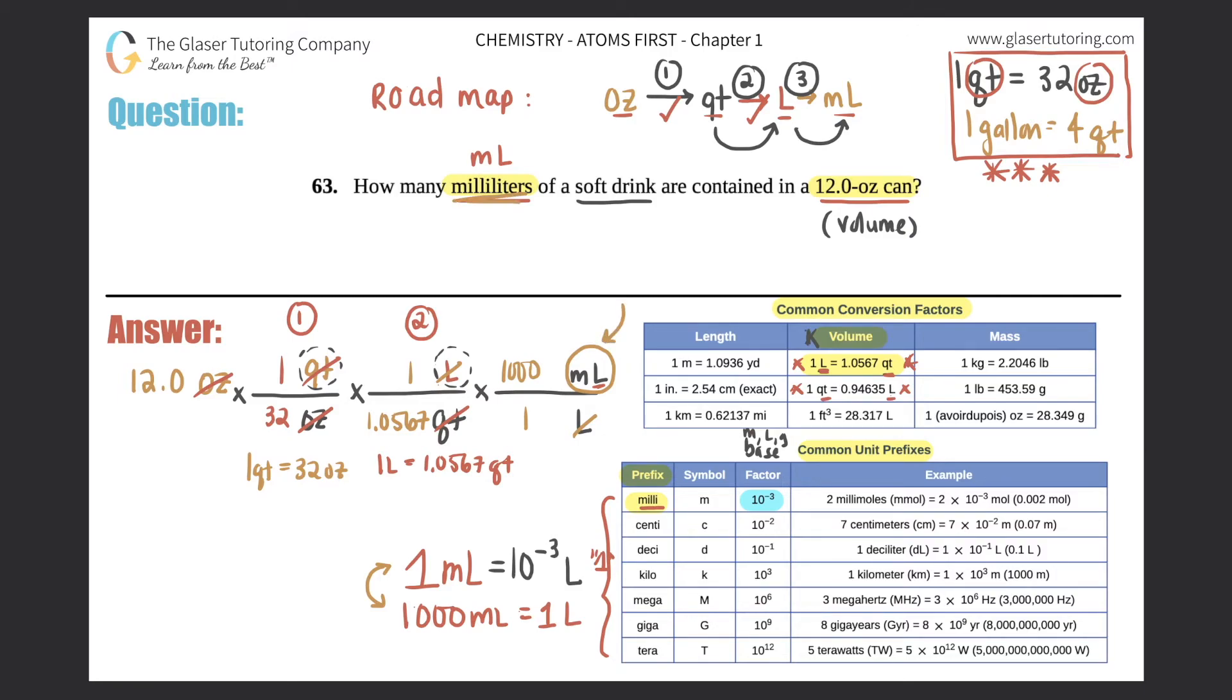When you do the math for conversion, the easiest way is to multiply the top, then you will times the bottom, and then you will finally divide the two. So you multiply all the tops straight across, then you multiply all the bottom straight across, then you finally get that one number, plug it in and solve. What I'm going to do is multiply the tops, so it would be 12.0 times one times one times a thousand. Technically anything times one is the same, so with conversions I like to skip the ones. I would just say 12 times a thousand and I get 12,000.